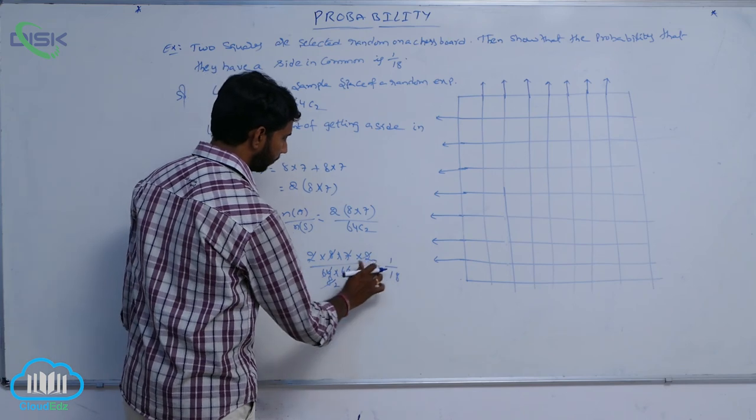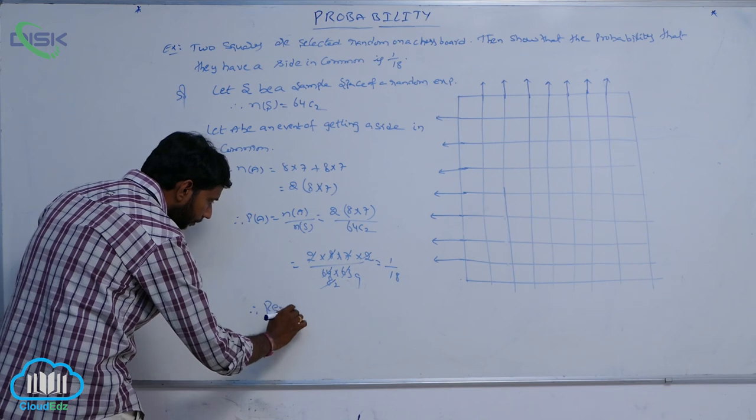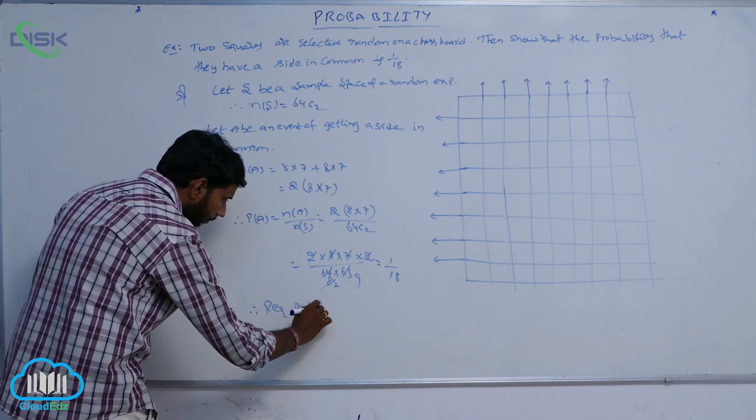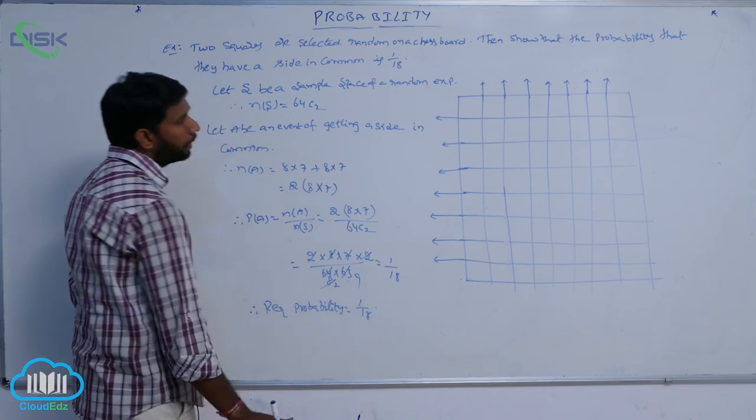Therefore, the required probability is equal to 1 by 18.